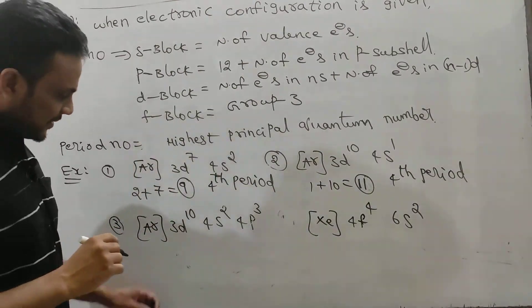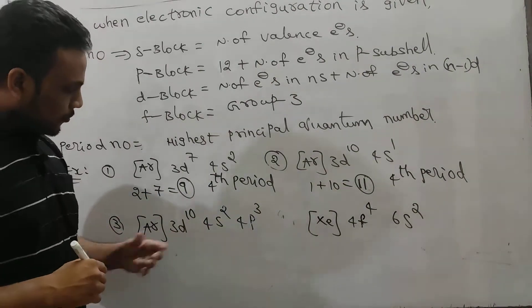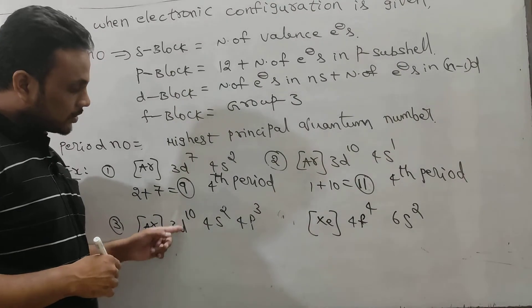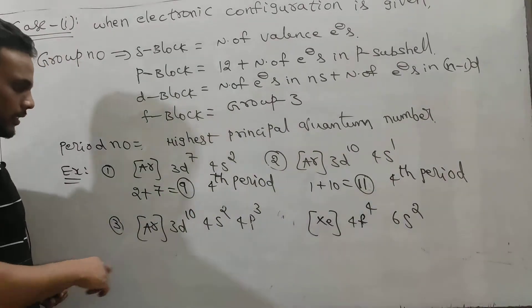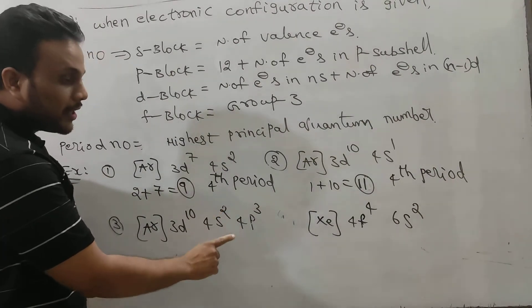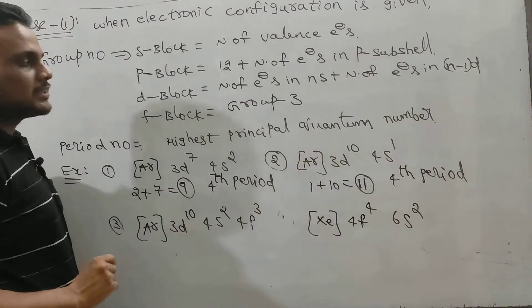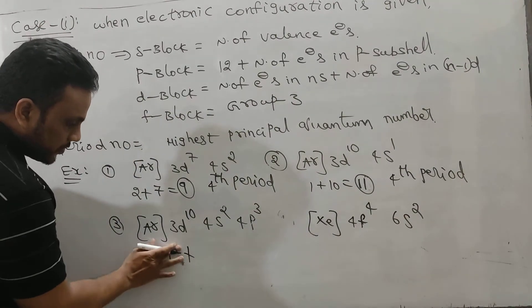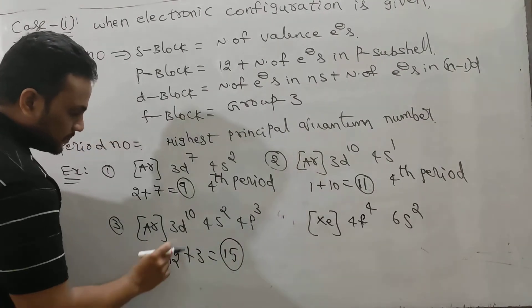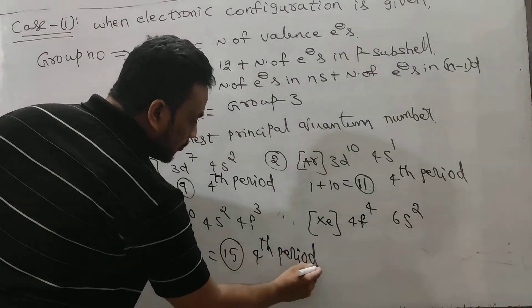This is another good question. After argon, the configuration shows 3D10, 4S2, 4P3. After completion of 4S, 3D also becomes completely filled, then the electron enters 4P as per energy order. The last electron entered 4P subshell means it is a P-block element. For a P-block element, the group number is 12 plus number of electrons in the P subshell, which is 3. So 12 plus 3 equals 15 — the group number is 15. And the highest principal quantum number is 4, so it also belongs to the fourth period.